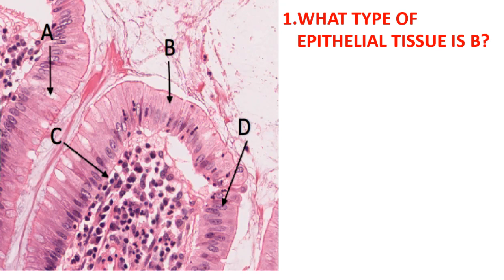If you look at this epithelial tissue, one thing you need to understand is that all the nuclei are at one section — they are all on the same level. You can also look at the shape of the nuclei; you find that the cells are in the columnar form. You also need to check if there is any other layer of cells. In this case, there is only one single layer of cells, so we can simply state that this is simple columnar epithelium.